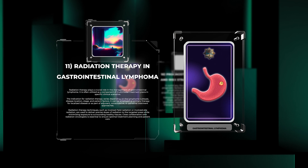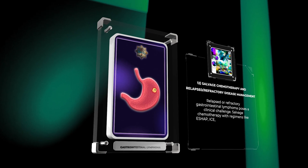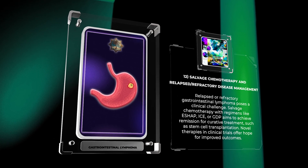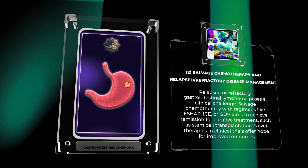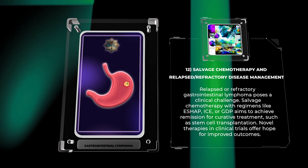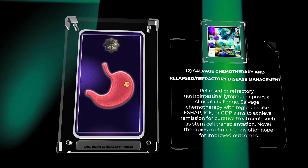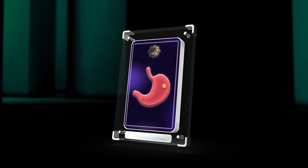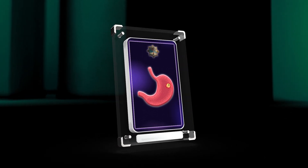Relapsed or refractory gastrointestinal lymphoma poses a significant clinical challenge. Salvage chemotherapy with regimens like ESHAP, ICE, or GDP aims to achieve remission for curative treatment such as stem cell transplantation. Novel therapies and clinical trials offer hope for improved outcomes.